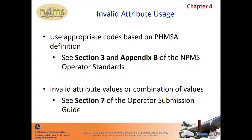Another common issue that NPMS staff finds is the use of invalid attribute values or the combination of values when identifying pipelines. The NPMS Operator Standards provides operators with a list of required attribute fields and values, a full description for each of the required attributes, as well as detailed instructions indicating when certain values are and are not required to be used. The Operator Submission Guide is a more user-friendly document that further clarifies the information found within the NPMS Operator Standards, provides example scenarios, and explains why certain attributes and attribute combinations are important to the NPMS. All of these documents are available for viewing or download in PDF format from the pipeline operator page on the NPMS website.